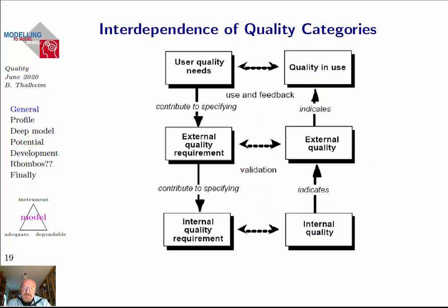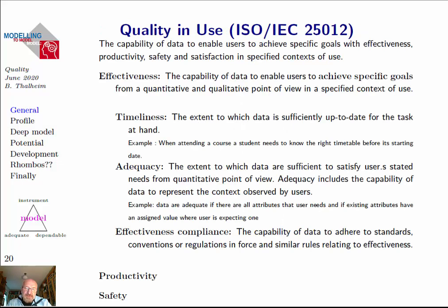If we consider the interdependence of quality categories, we can say that since we want to satisfy user needs, we have user quality needs that give us an understanding of which quality-in-use parameters are important. Those user quality needs contribute to the specification of external quality requirements, which can again be expressed as external quality parts. We have a workflow for developing quality categories and characteristics according to the function a model has in a scenario.